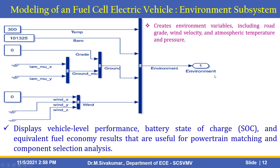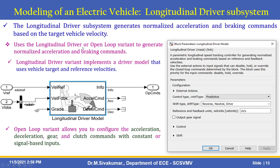The Longitudinal Driver Subsystem uses a parametric longitudinal speed tracking controller to generate normalized acceleration and braking commands based on reference and feedback velocities. The longitudinal driver variant implements a driver model that uses vehicle target and reference velocities. Parameters include control type, shift type, and velocity. Closed-loop commands are also determined by this block.